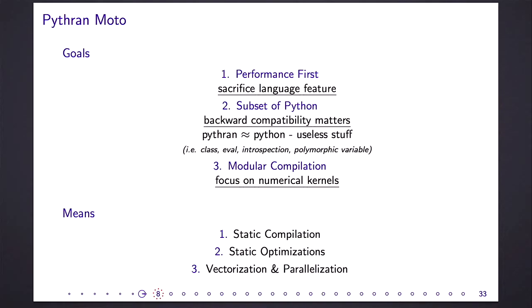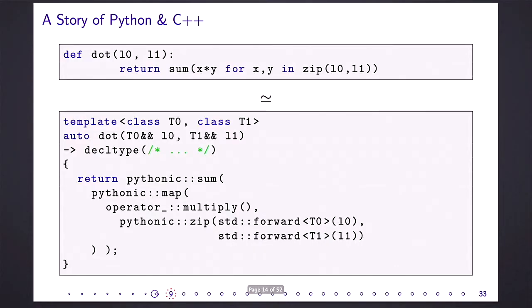We offer modular compilation, which means you compile one module and it will interact with the rest of your code. We focus on numerical kernels. I showed you the hotspot earlier. And to do that, we do a lot of static analysis. We do vectorization, parallelization when we can. And the reason we do static compilation is that it buys time for complex analysis.